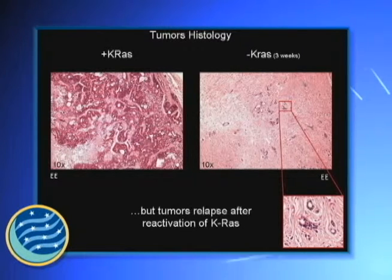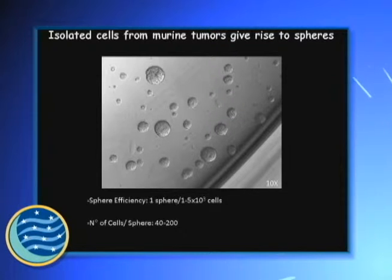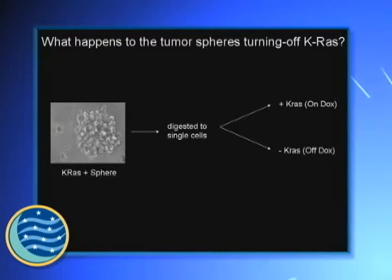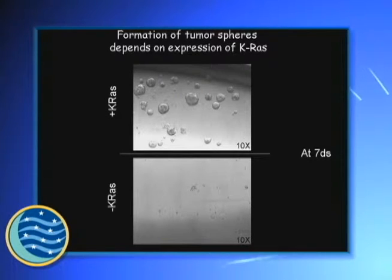I tried to study this model from a stem cell point of view, and I tried to see if cells from this tumor are able to form a sphere. Tumor spheres are a well-known surrogate of cancer stem cells. I digested a single-cell suspension from this tumor and plated the cells in the presence or absence of doxycycline to maintain or repress the expression of KRAS. What I found is that the formation of tumor spheres depends on the expression of KRAS.